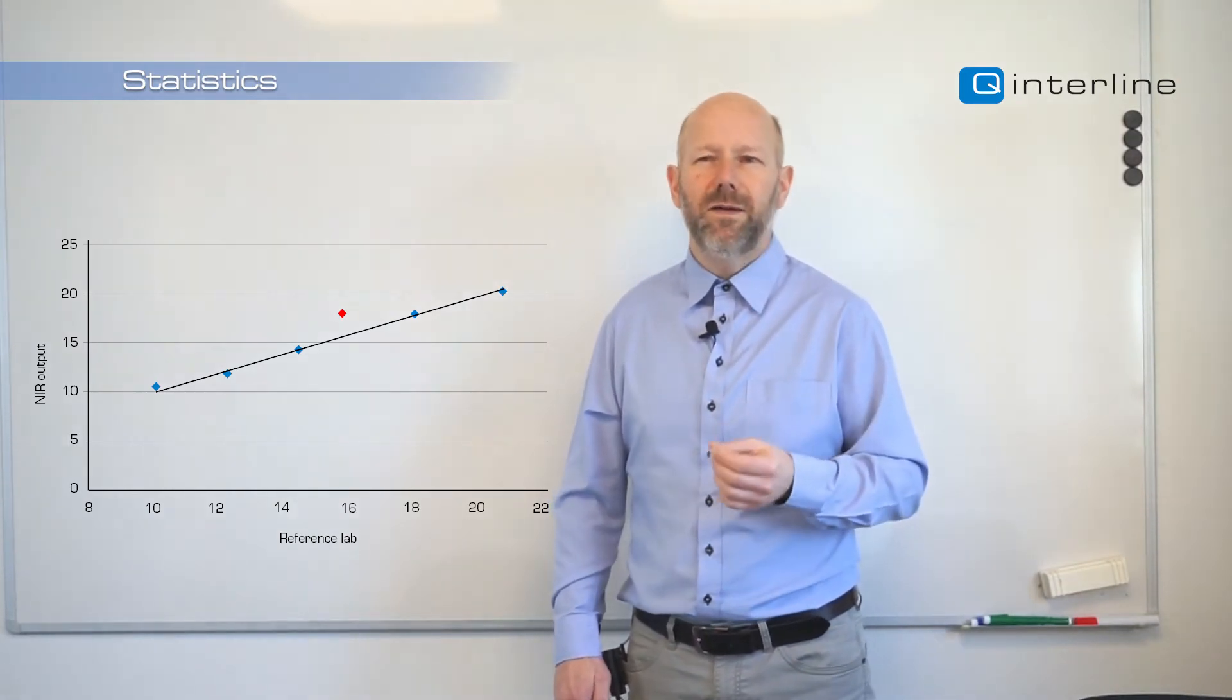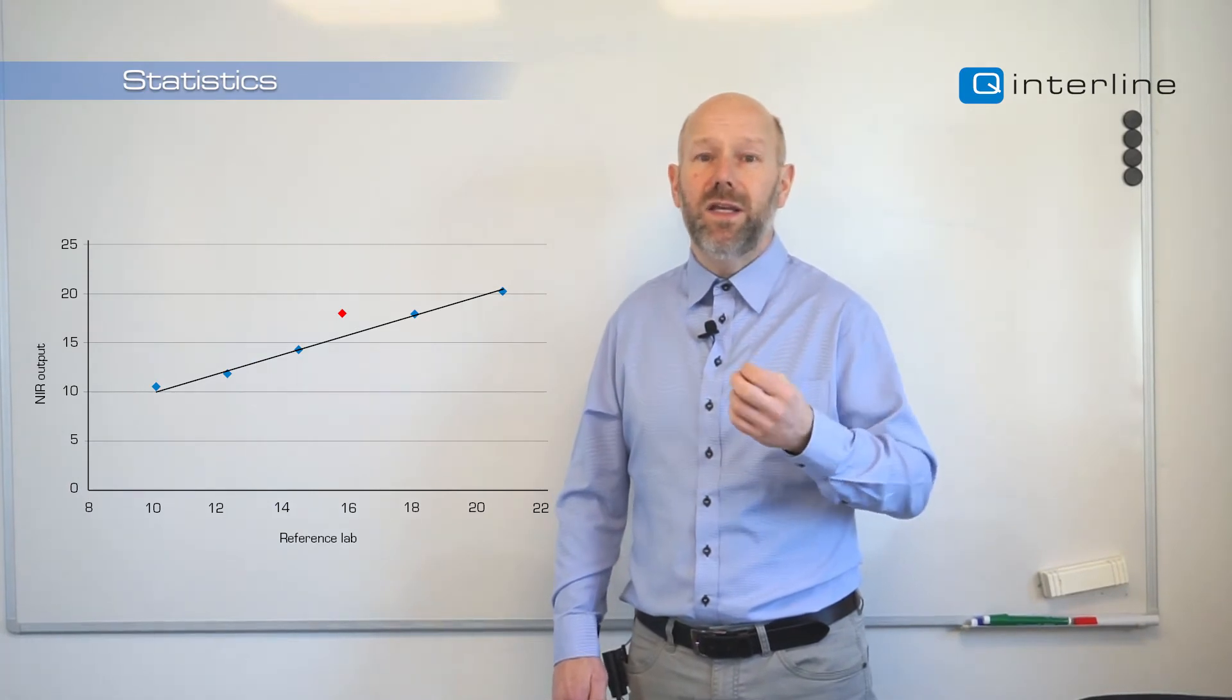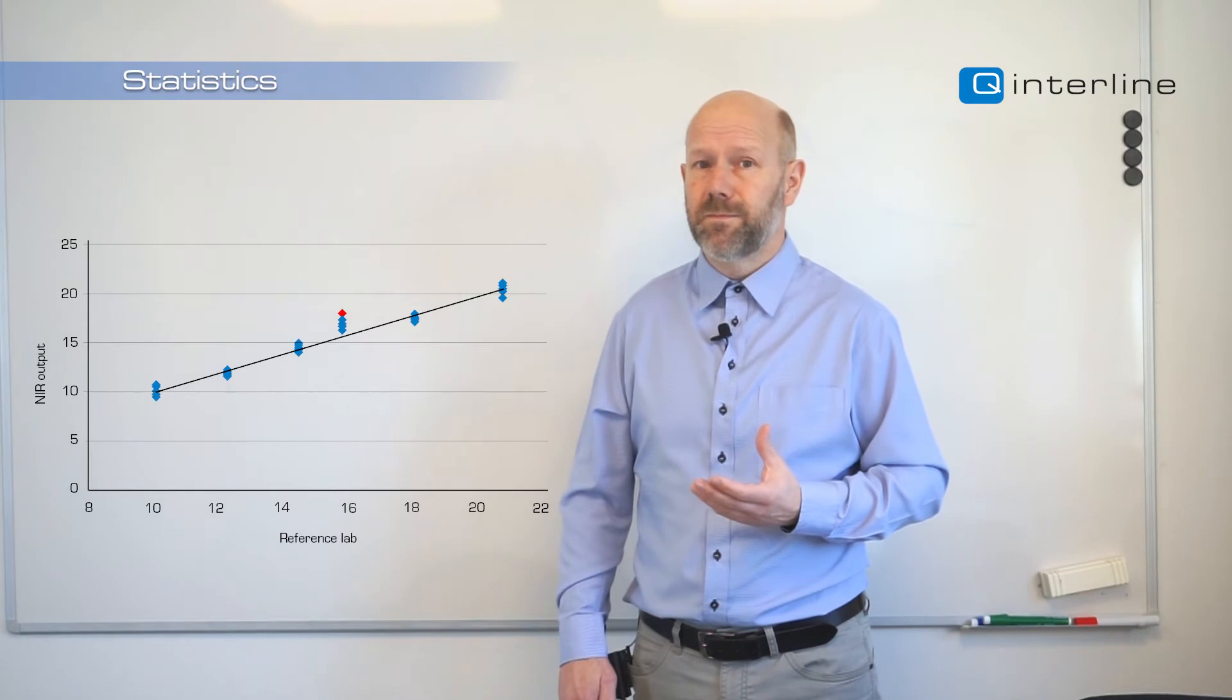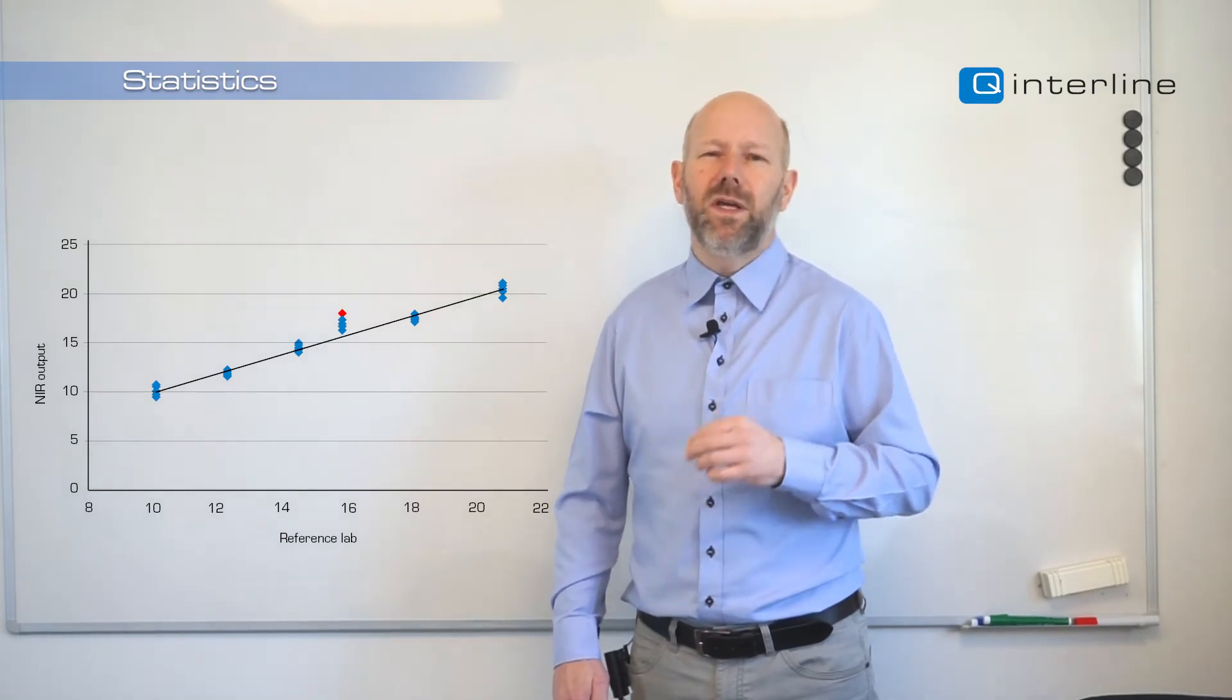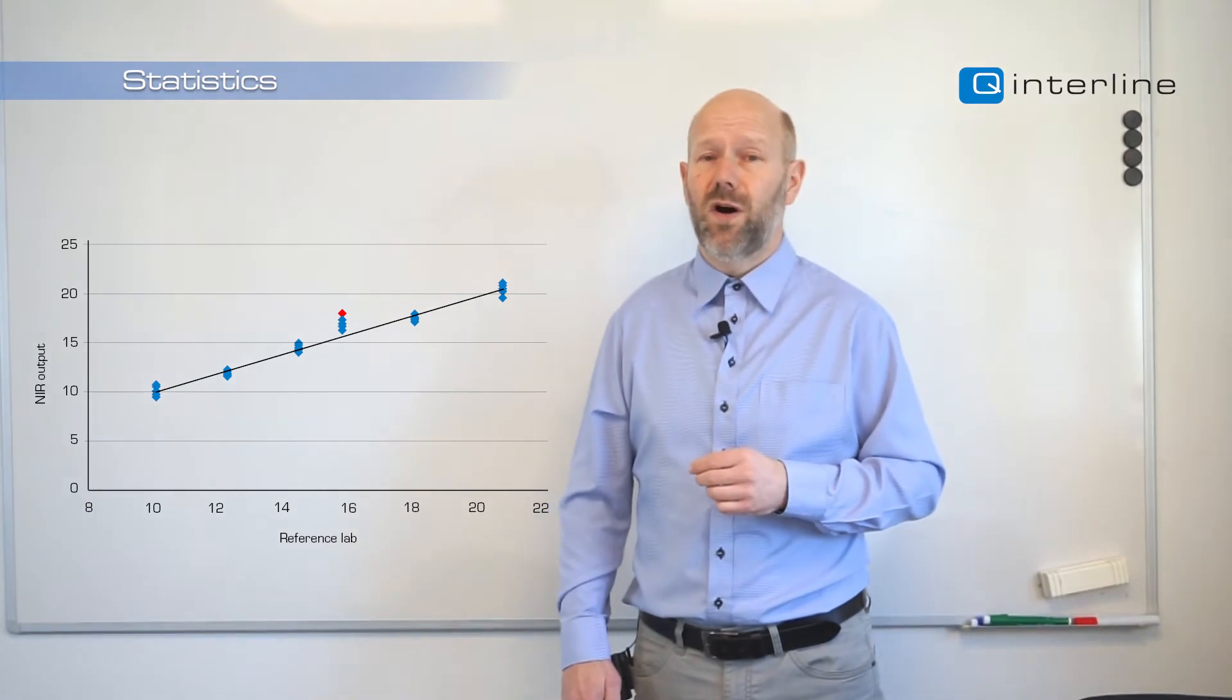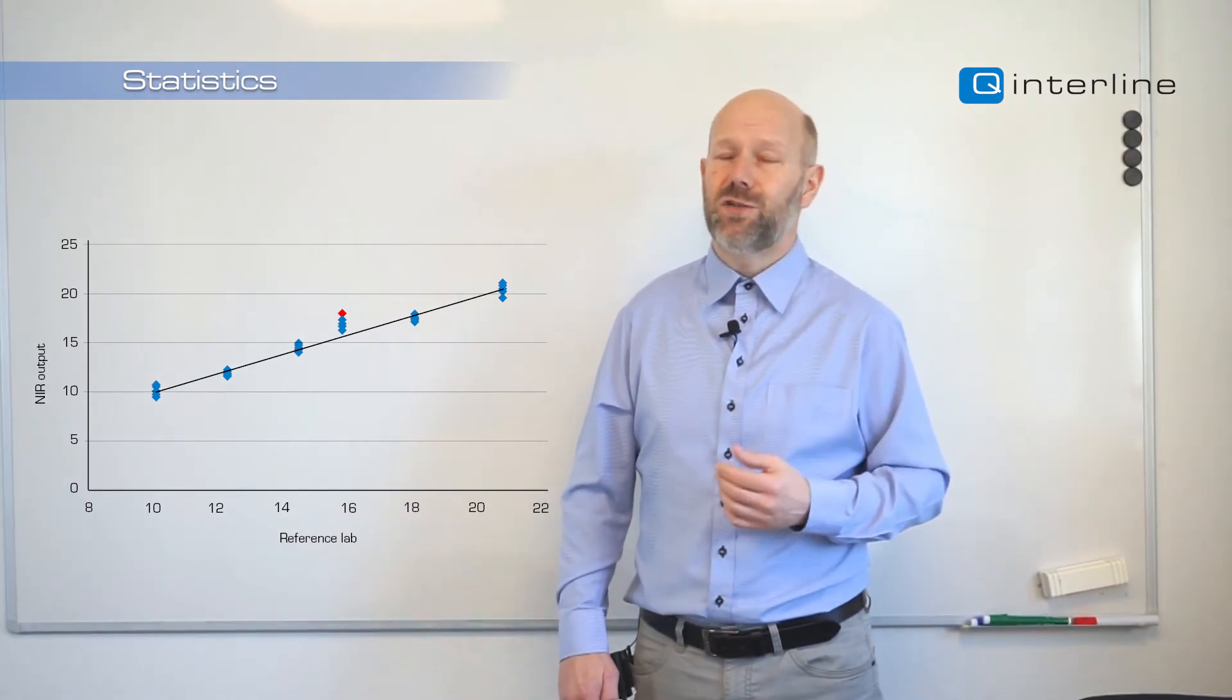In order to visualize that, we may actually run each of these samples five times. Then it would look like this. If that sample is truly off, then the average of these will be off. Otherwise, it will just be clustering.